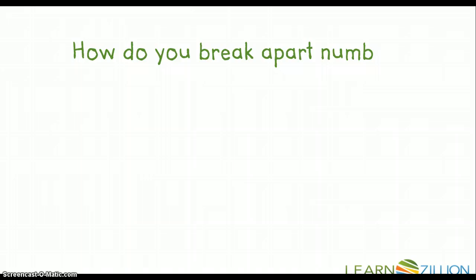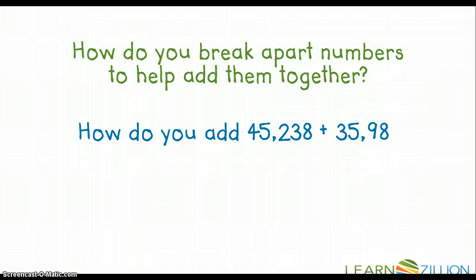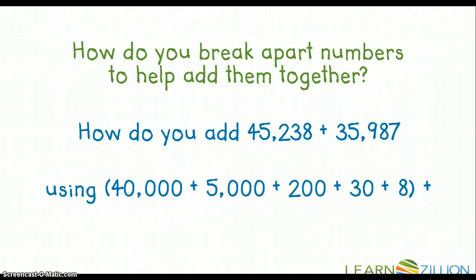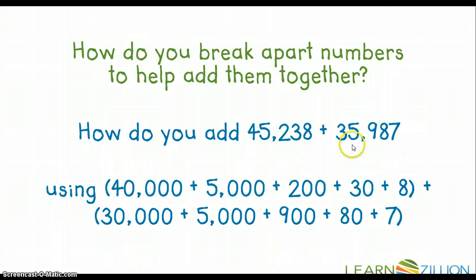So our guiding question for today is, how do you break apart numbers to help add them together? How do you add 45,238 plus 35,987? Well, if we wrote these two numbers in expanded form, for that first number, 45,238, we would break it down in this way: 40,000 plus 5,000 plus 200 plus 30 plus 8. And then for this larger number, 35,987, we would break that down by 30,000, 5,987.